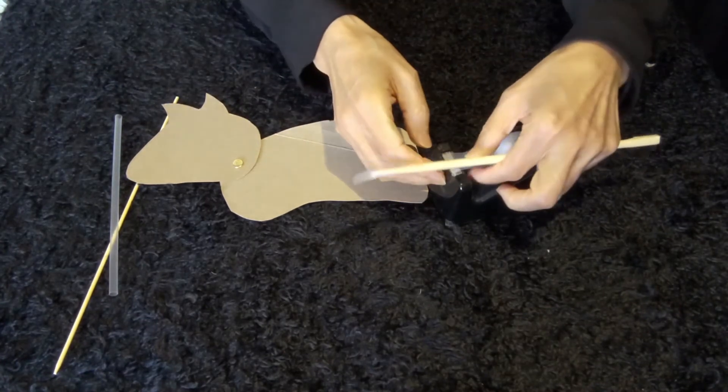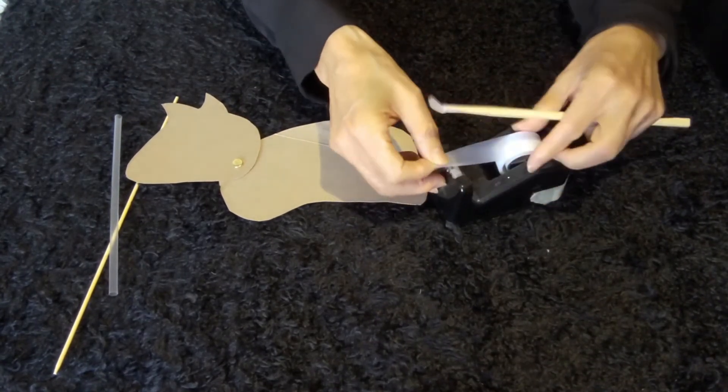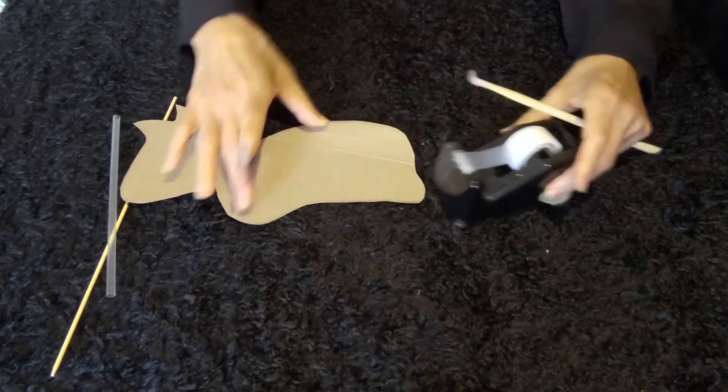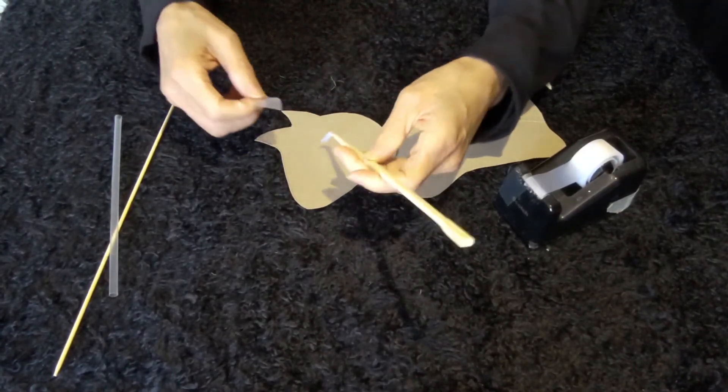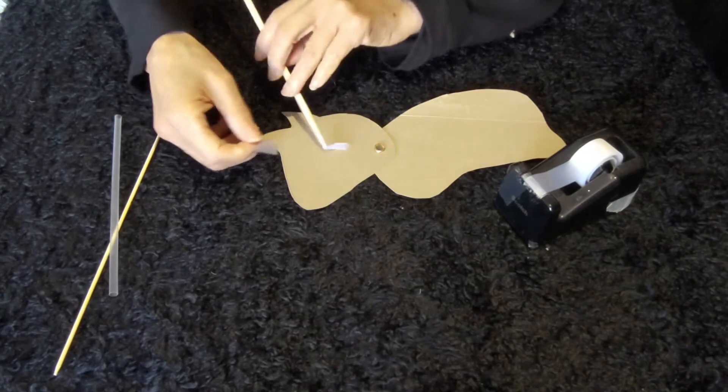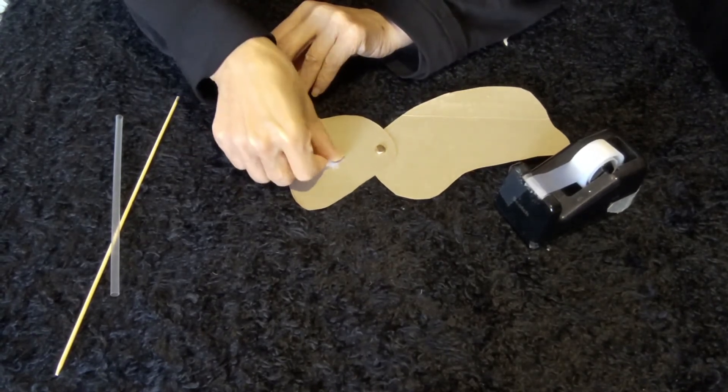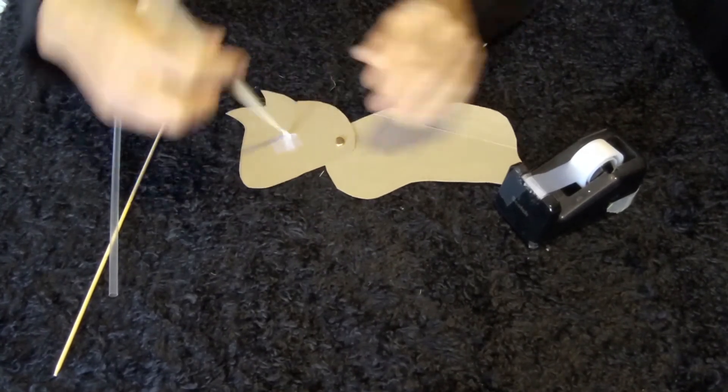So you're going to use another piece of tape, about one inch. That's enough. And then you're going to tape them together. See? Now I can manipulate the head without using my hand directly on it.